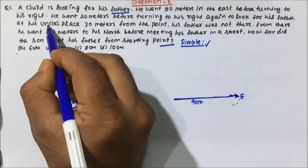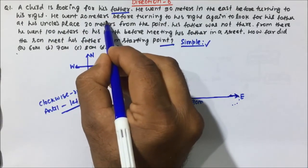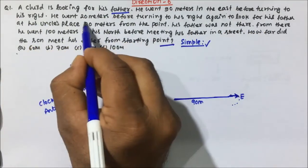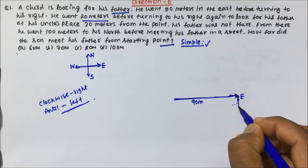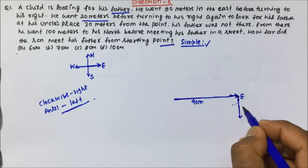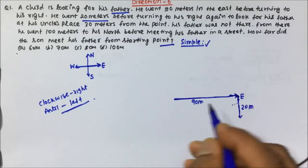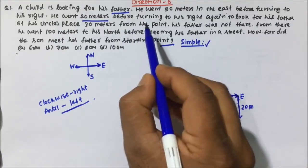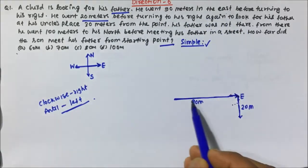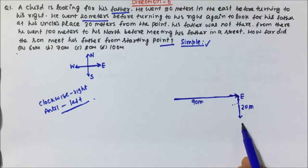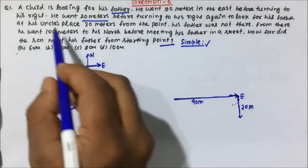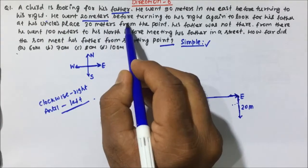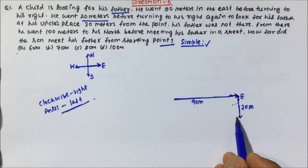From here, if we talk about clockwise, clockwise will be downward. He went 90 meters in the east before turning to his right, then went 20 meters. So after turning to his right, the child goes 20 meters downward — this will be 20 meters. He then turns right again before going further.